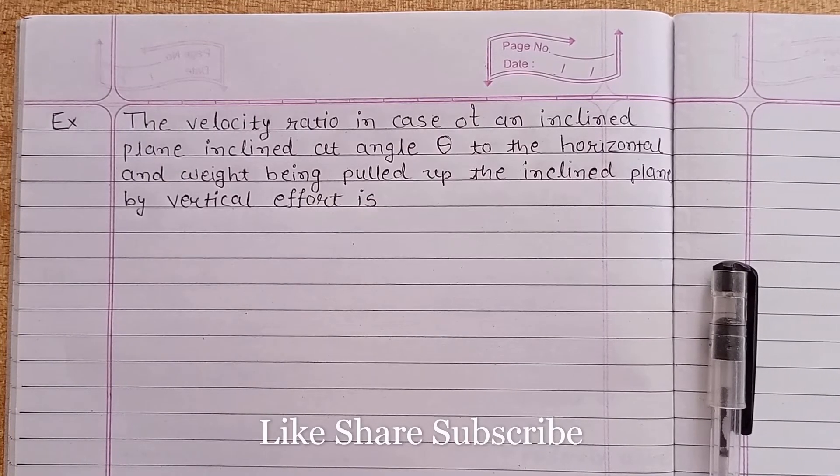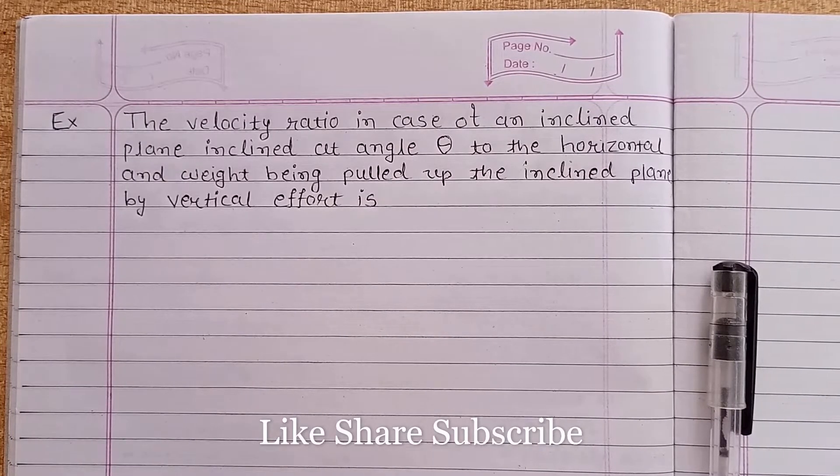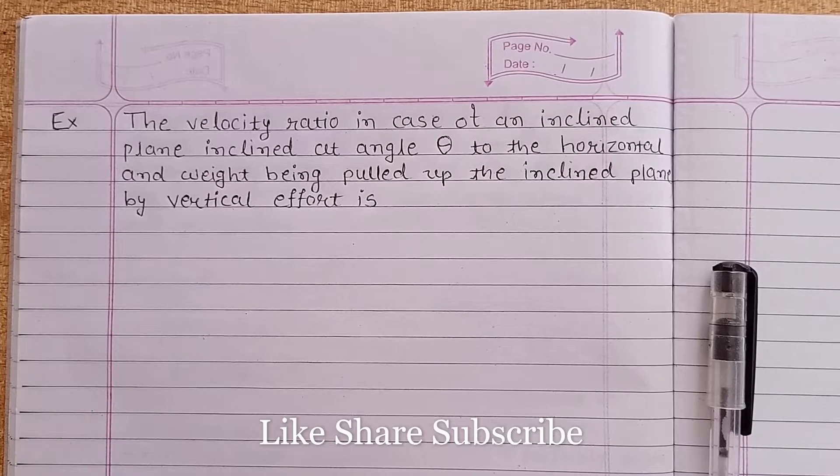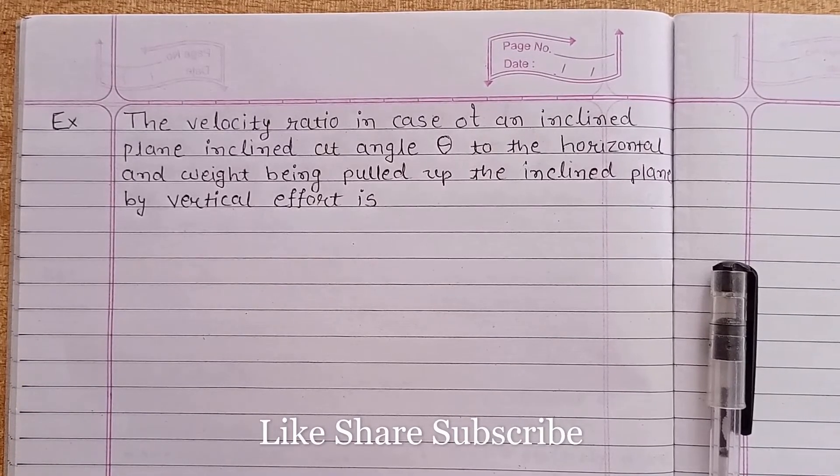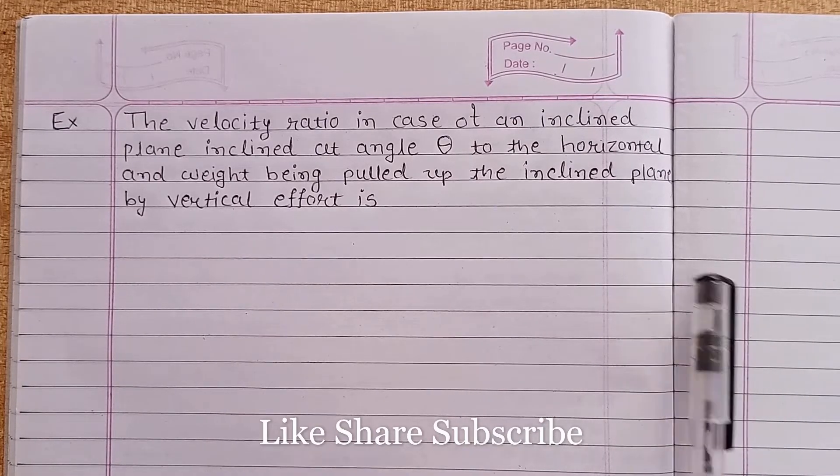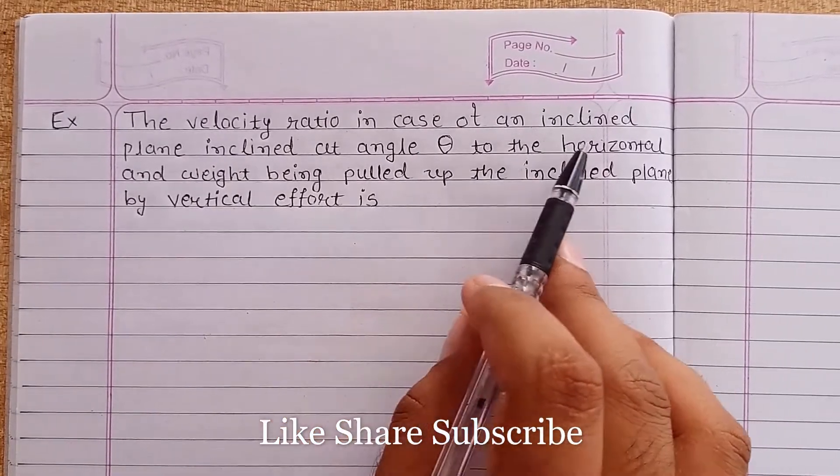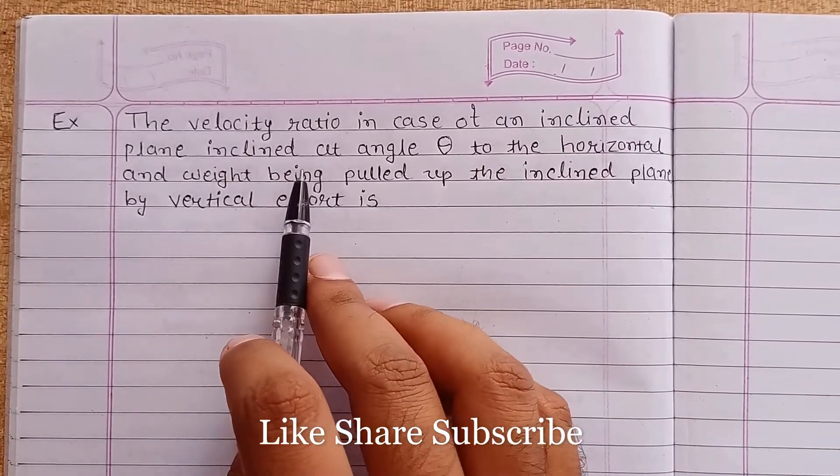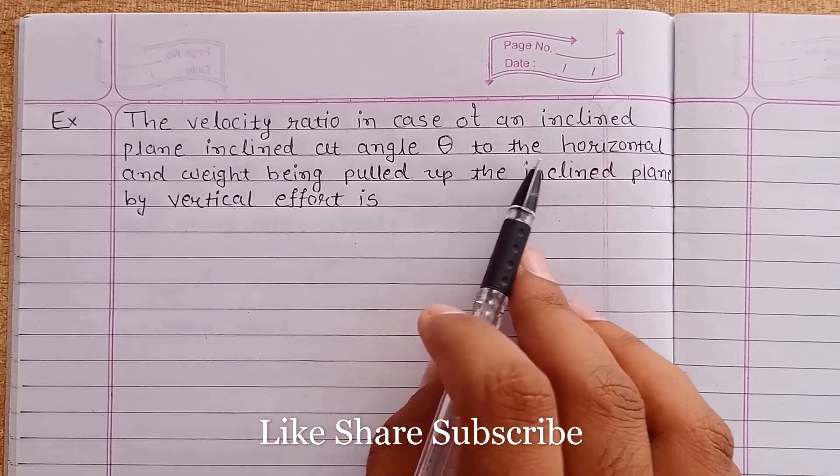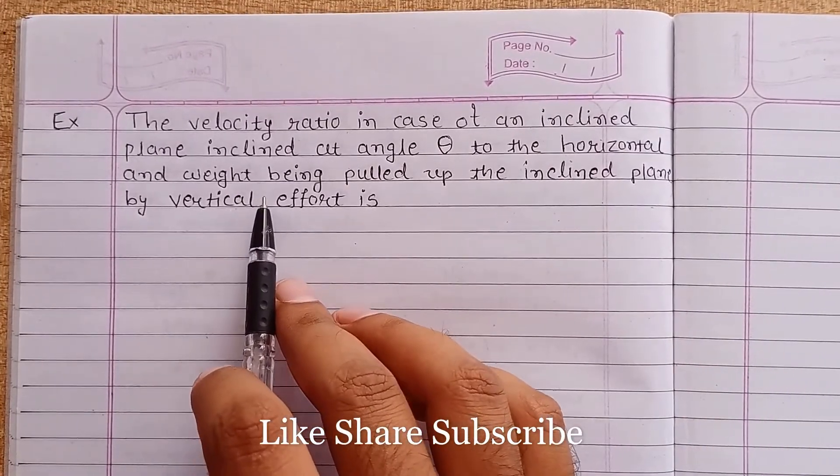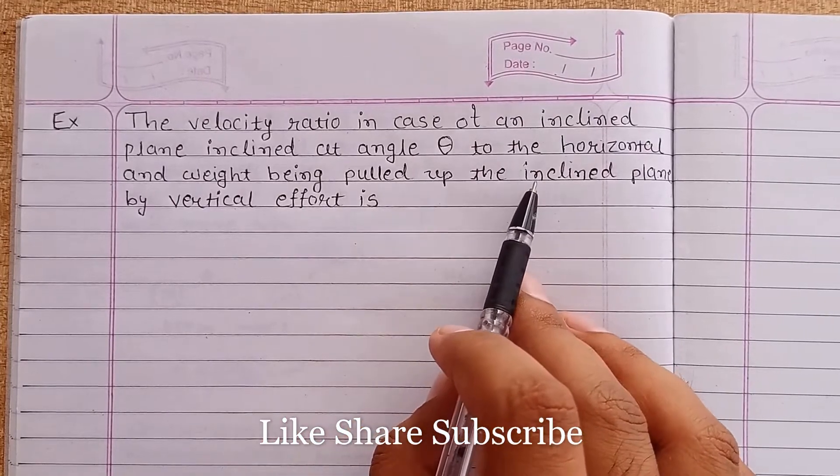Hello friends, welcome back to the channel. In this video we will solve one problem related to velocity ratio and mechanical advantage. This topic is from engineering mechanics. Let's read the problem statement: Velocity ratio in case of an inclined plane inclined at an angle theta to the horizontal and weight being pulled up the inclined plane by vertical effort.